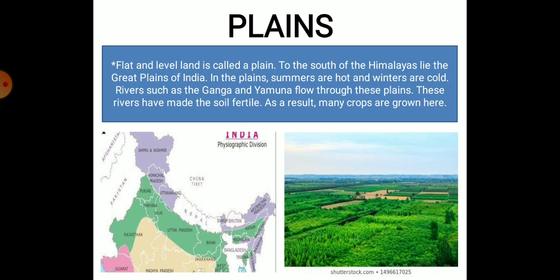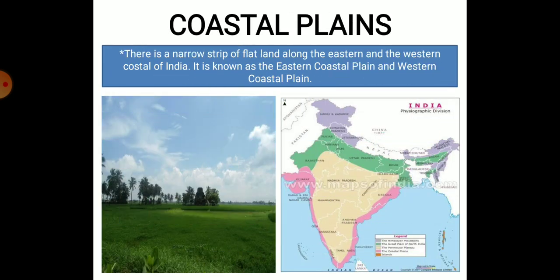Plains: Flat and level land is called a plain. To the south of the Himalayas lie the great plains of India. In the plains, summers are hot and the winters are cold. Rivers such as the Ganga and the Yamuna flow through these plains. These rivers have made the soil fertile. As a result, many crops are grown here. There is a narrow strip of flat land along the eastern and the western coast of India.